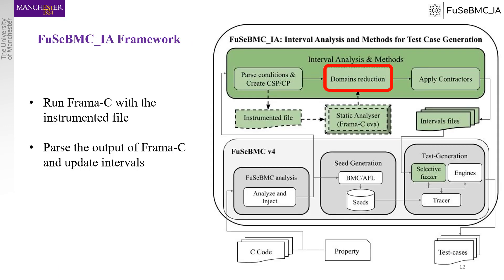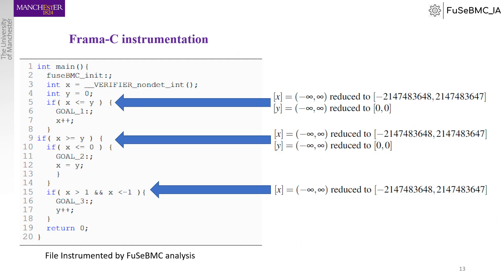Next, we start the domain reduction stage, where we run PROMCIA with the instrumented file as input and parse the output. When parsing, we take into account which goal and how many variables it has. This usually yields smaller intervals than the initial ones. Then we update each variable domain with the reduced intervals.